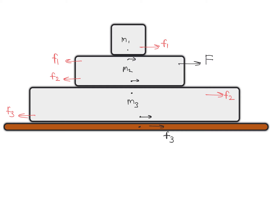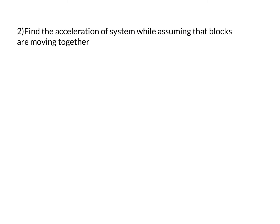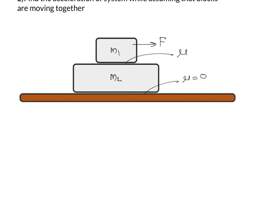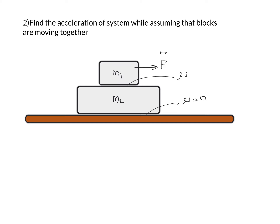If you are not getting this, please revise this video and try to understand step by step how we write the direction of friction in different situations. Now we will discuss the second step: find the acceleration of the system while assuming that the blocks are moving together. We don't know whether m1 and m2 are going to move together with the same acceleration or with different accelerations, so we first assume they move together and find the acceleration.